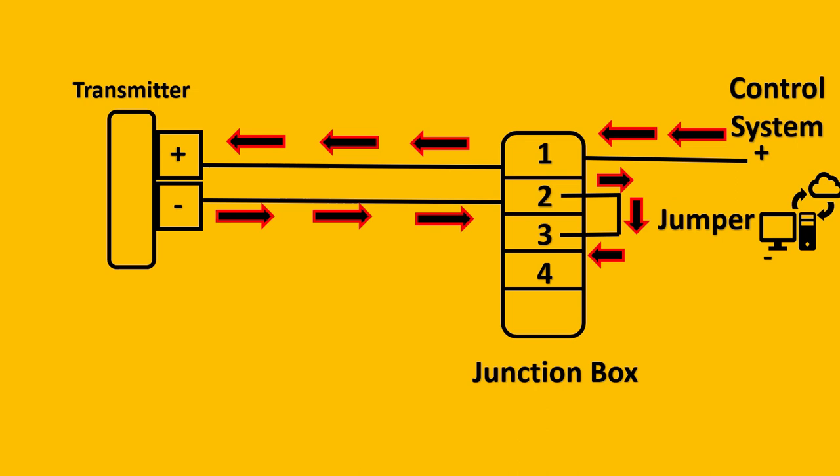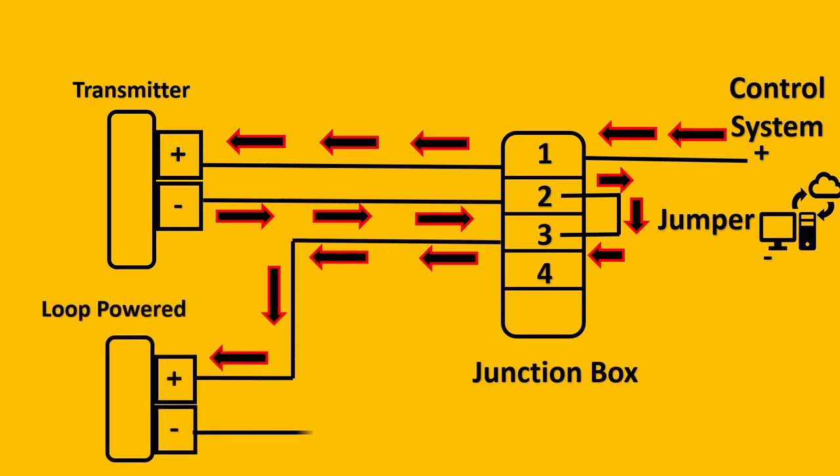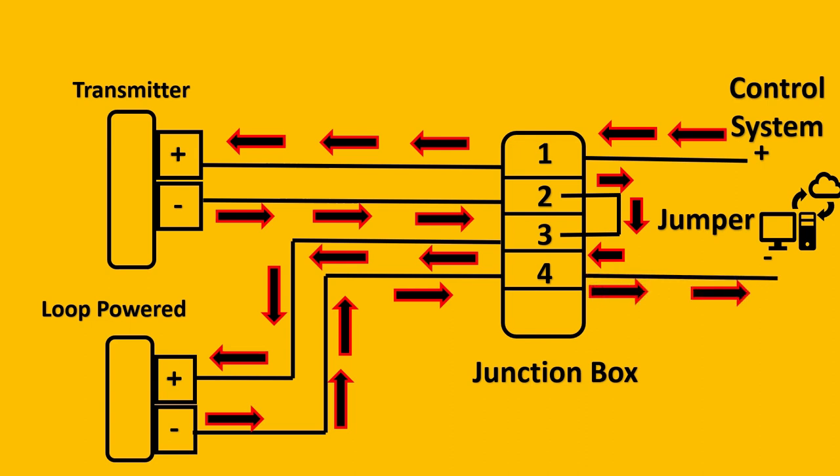The jumper basically will transfer the signal from 2 to 3. From 3 it will go back to your loop powered indicator, and the negative of the loop powered indicator is going to go back to your junction box. And from terminal number 4, instead of 2, we will take the signal back to control system.